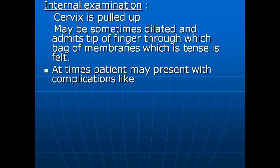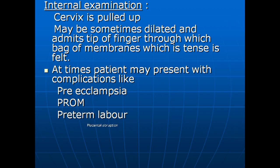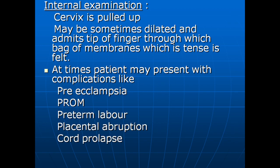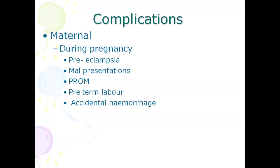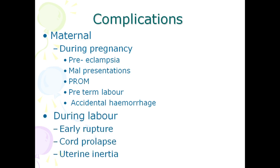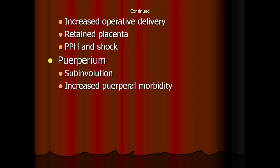Patients may present with complications like preeclampsia, PROM, preterm labor, placental abruption, and cord prolapse. Complications during pregnancy include eclampsia, malpresentations, premature rupture of membranes, preterm labor, and antepartum hemorrhage. During labor: early rupture of membranes, cord prolapse, uterine inertia, increased operative delivery rate, placenta previa, and PPH. During puerperium: subinvolution and increased puerperal morbidity. Fetal complications include increased perinatal mortality.